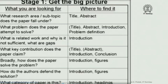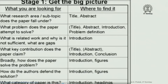Now, stage one is further detailing of getting the big picture. Collect back your own paper from your neighbour — this is slightly harder work. What are you looking for? What research area or sub-topic does the paper fall under? This will be in the title and abstract. What problem does the paper attempt to solve? This will be partly indicated by the title, certainly by the abstract, introduction, and problem definition if there is one.